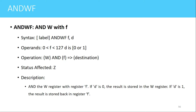The next instruction is ANDWF. Using this instruction we can perform the ANDing operation of the value present in the working register and the value present in the file register mentioned in the instruction. The syntax is ANDWF F, D — where F is the file register, which can be a RAM memory location, any register, or an SFR. D is the destination bit: if D is 0, the result is stored in the working register; if D is 1, the result is stored in the file register.